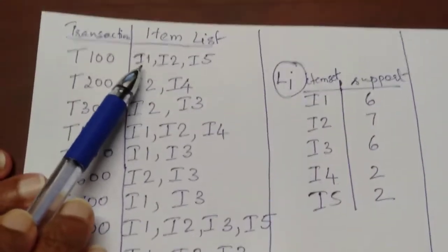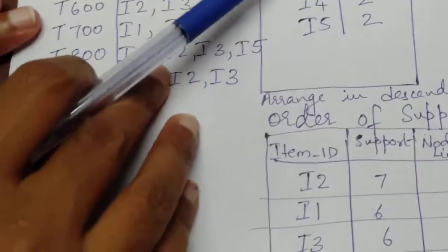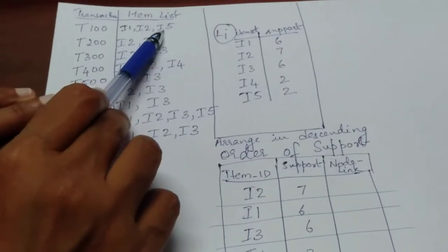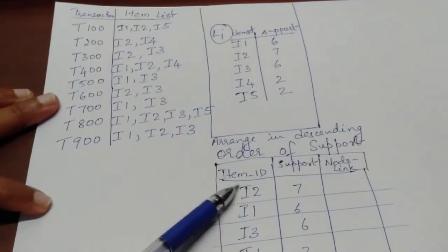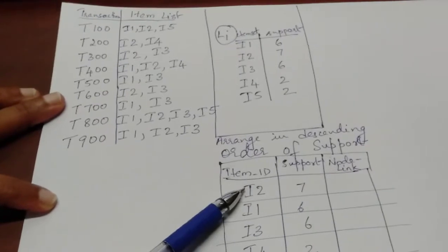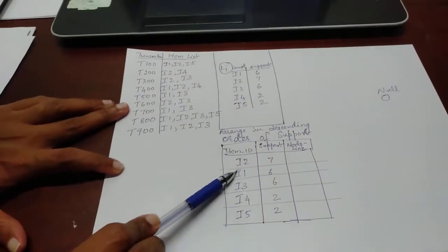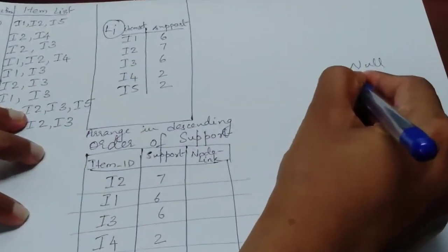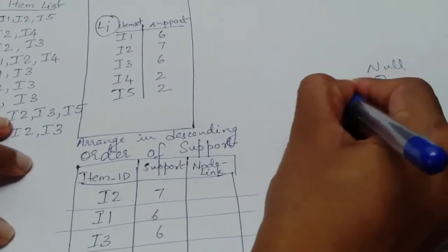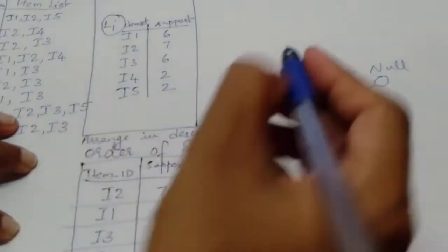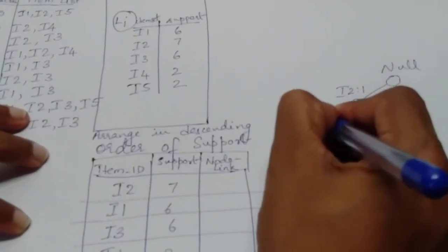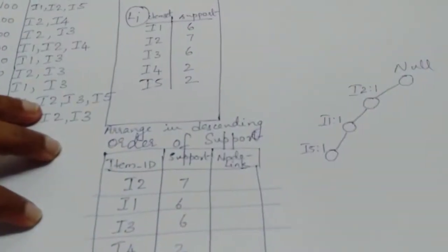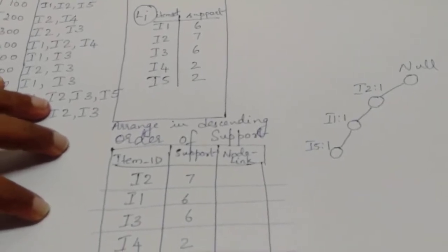The first transaction is I1, I2, I5. But according to the descending order, I2 has the highest frequency, so it will be reordered as I2, I1, I5. From the root null node, I draw I2 with support 1, then I1 with support 1, then I5 with support 1. That completes the first transaction.